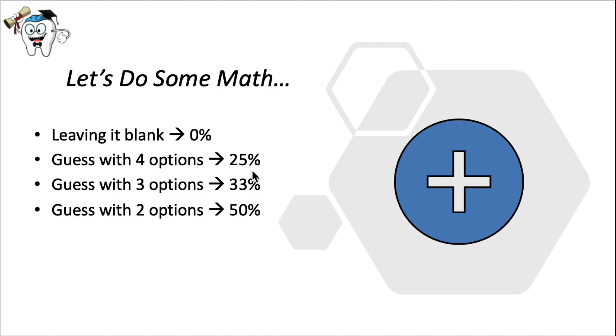By leaving a question blank, you have zero percent chance of getting it right. By blindly picking from four options, you have a 25% chance of getting it right. If you're able to eliminate one option of those four, you now have a 33% chance of getting it right.